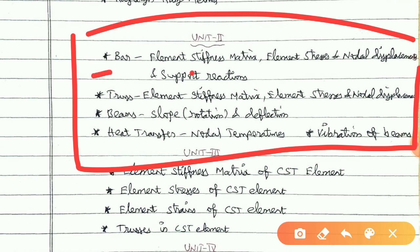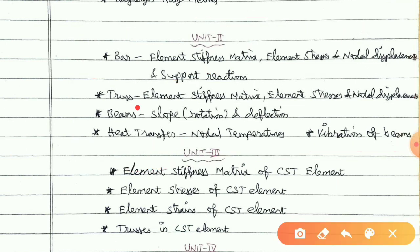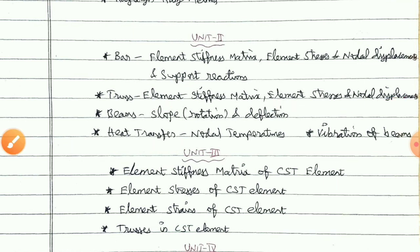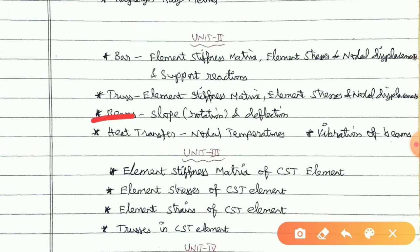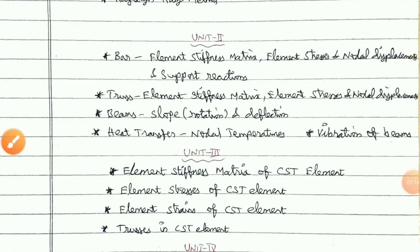Bar element: stiffness matrix, element stress, nodal displacement and support reactions. Stress element: element stiffness matrix, element stress, nodal displacement. Beams: slope, rotation and deflection. Heat transfer: nodal temperatures, vibration of bearings. This is unit 2.